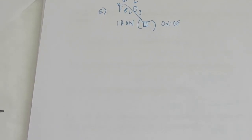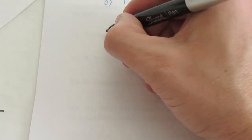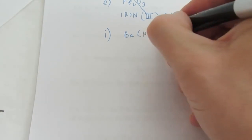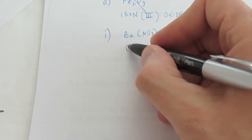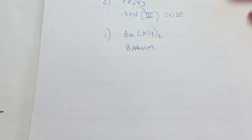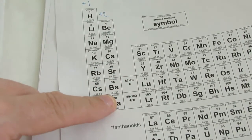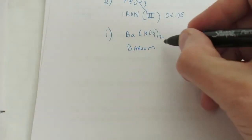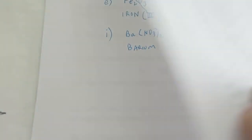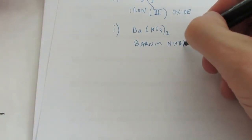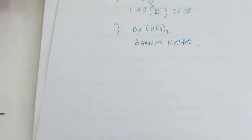Let's hop over to letter I: Ba(NO3)2. Ba is barium — an alkaline earth metal in group two, so I do not need Roman numerals for it. NO3 is a polyatomic ion: NO3 negative one is called nitrate. So this is barium nitrate, and we're done with letter I.